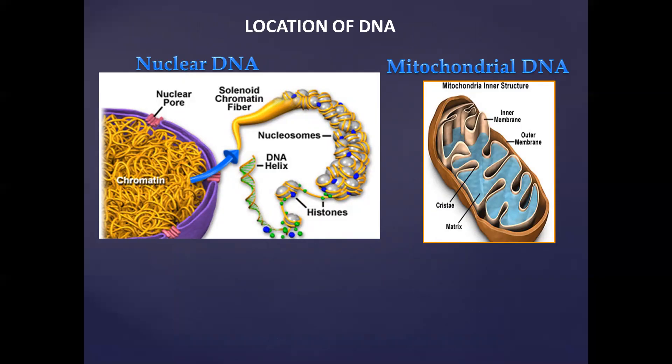The DNA within your nucleus is inherited from your mother and your father — half of your chromosomes come from your mother and the other half from your father. However, mitochondrial DNA interestingly only comes from your mother. We will discuss mitochondrial DNA and how we use it to find maternal ancestry when we do the section on evolution.